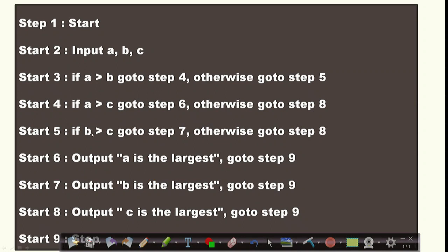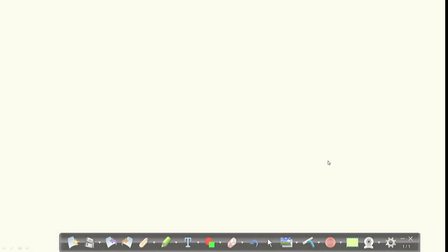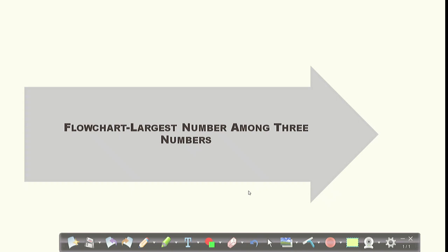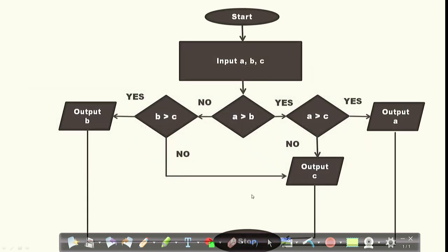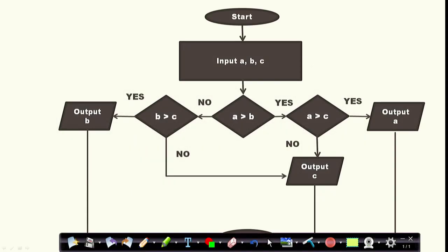Then we will check: if A is not greater than B, then check if B is greater than C — then B is the largest number. If not, then C is the largest number. This is the algorithm, and here I am also giving you a flowchart to find the largest number.